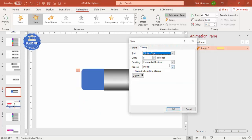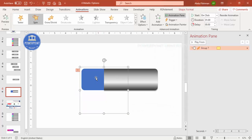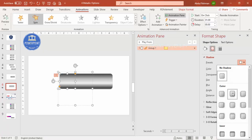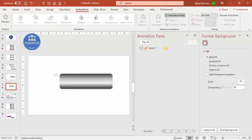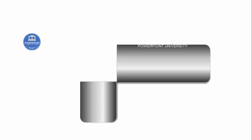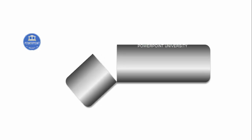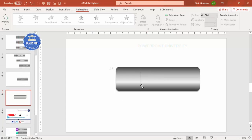Double-click the animation and set the speed to Fast so it opens quickly. Then select the cap shape, right-click, go to Format Shape, and apply the same gradient fill. Go to Effects > Shadow and add the shadow with increased distance. If I play now, you can see it is working perfectly. This is the small trick that helps you do the animations better.